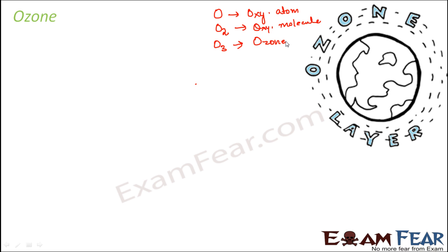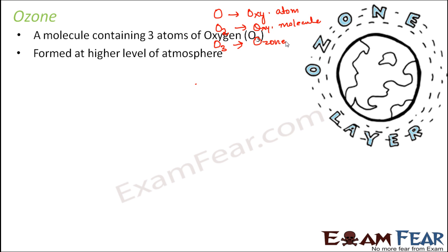So ozone is formed by three atoms of oxygen. A molecule containing three atoms of oxygen, that is O3, is ozone. Now where do we find this ozone? So ozone is actually formed at higher levels of the atmosphere, and how is it formed?